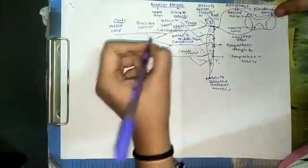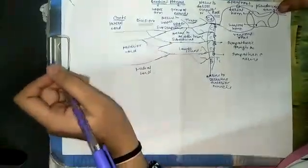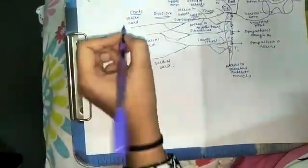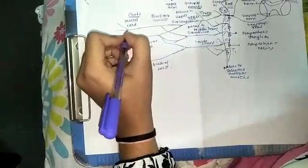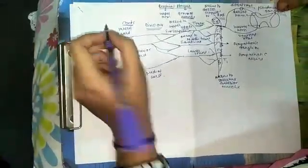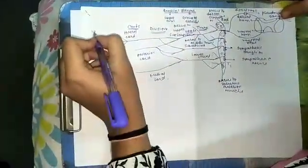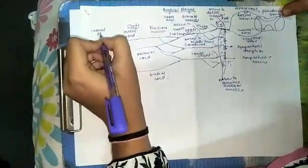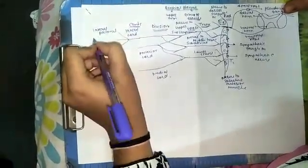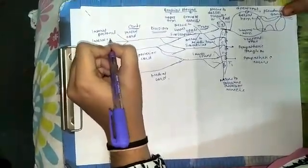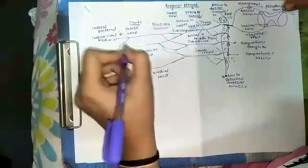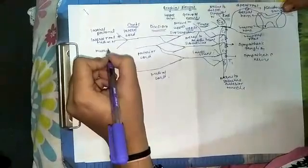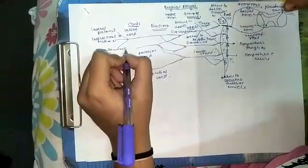An important point to note about the lateral cord is that no nerve gets raised from the division structure. The lateral cord divides into three nerves: one is the lateral pectoral nerve, another is the lateral root of the median nerve, and the third is the musculocutaneous nerve.